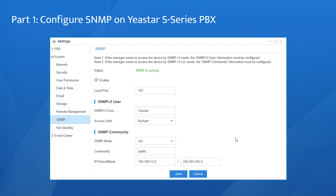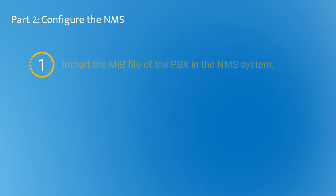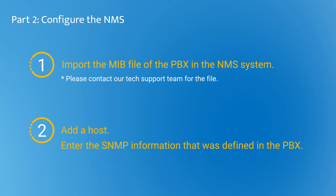That was all the configuration on the PBX. The next step is some configuration on the NMS. Here are the general steps: First, import the MIB file of the PBX into the NMS system — please contact our tech support team for the file. Second, add a host and enter the SNMP information that was defined in the PBX. Make sure the SNMP settings are the same on both devices.